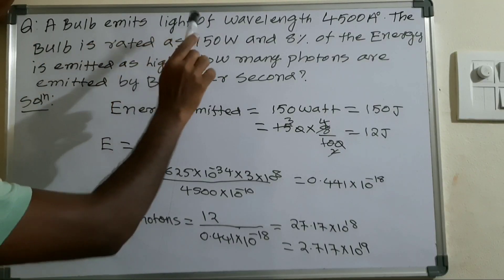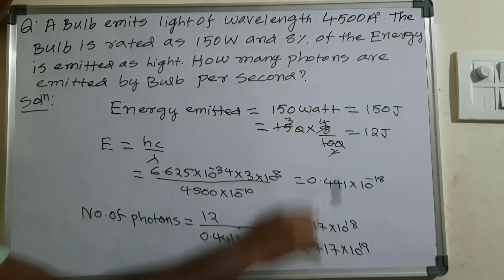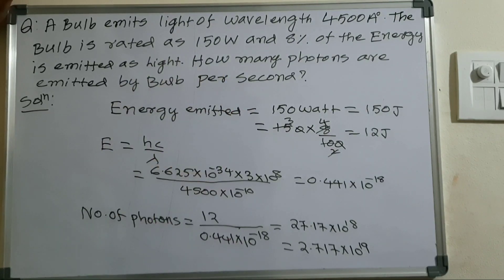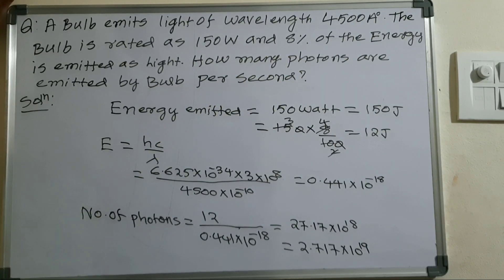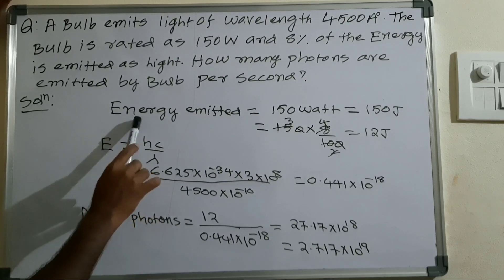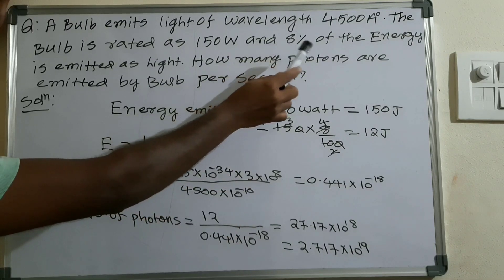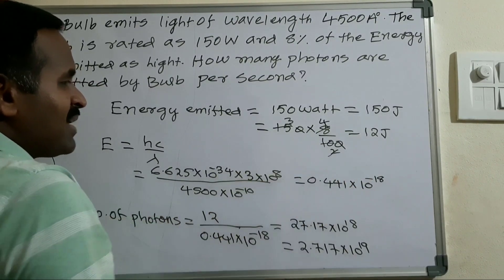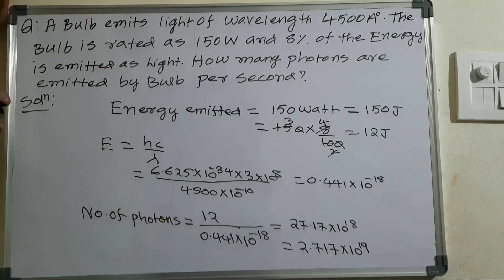The next problem: a bulb emits light of wavelength 4500 Angstroms. The bulb is rated at 150 watts, meaning it emits 150 joules per second, and only 8 percent of the energy is emitted as light. How many photons are emitted by the bulb per second? Energy emitted as light is 150 multiplied by 8 divided by 100.